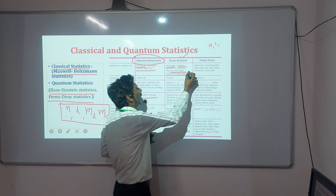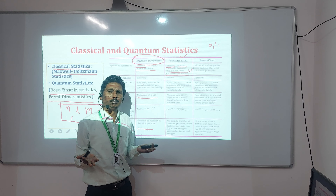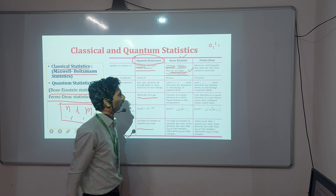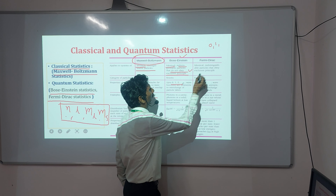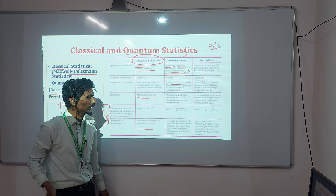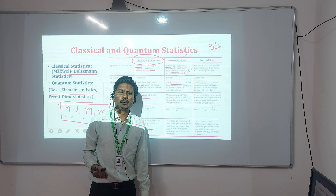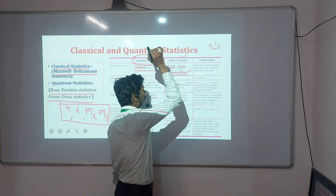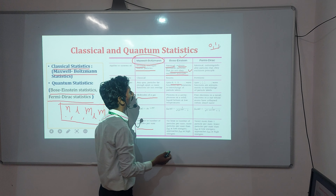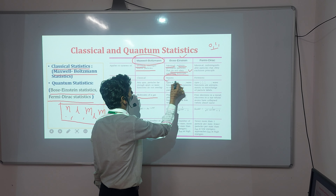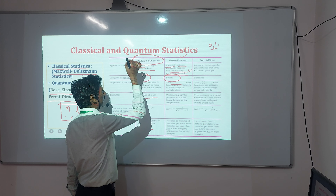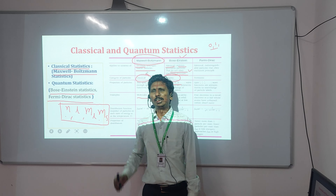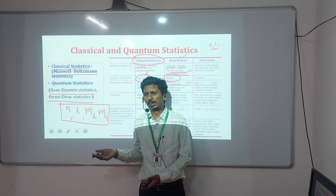Because Bose-Einstein particles are not following the Pauli exclusion principle, it is possible that the particles have the same four quantum numbers. The particles have integral spin: 0, 1, 2, 3, 4, 5, 6. The particles which obey Bose-Einstein statistics are known as bosons. The particles obeying Maxwell-Boltzmann distribution are classical particles, since Maxwell-Boltzmann distribution is classical statistics.